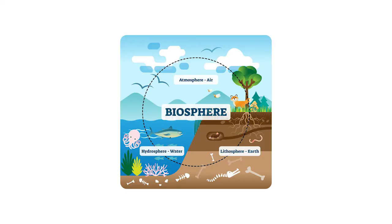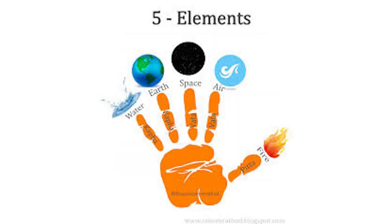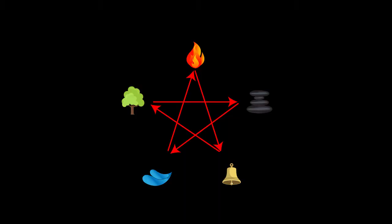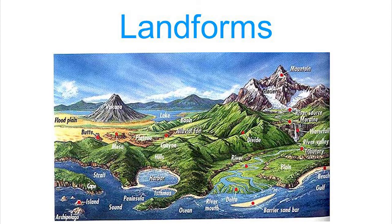The biosphere has oxygen and temperature that help us to live. Our earth is surrounded by 5 elements of nature called land, water, fire, air, and sky. Physical features of lands are called landforms.